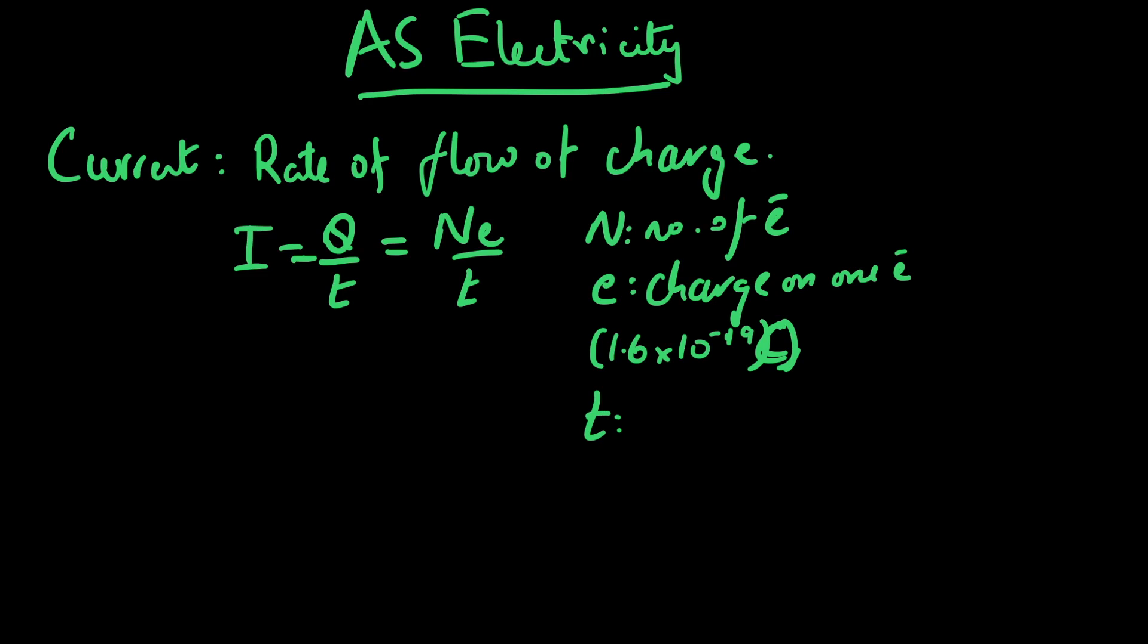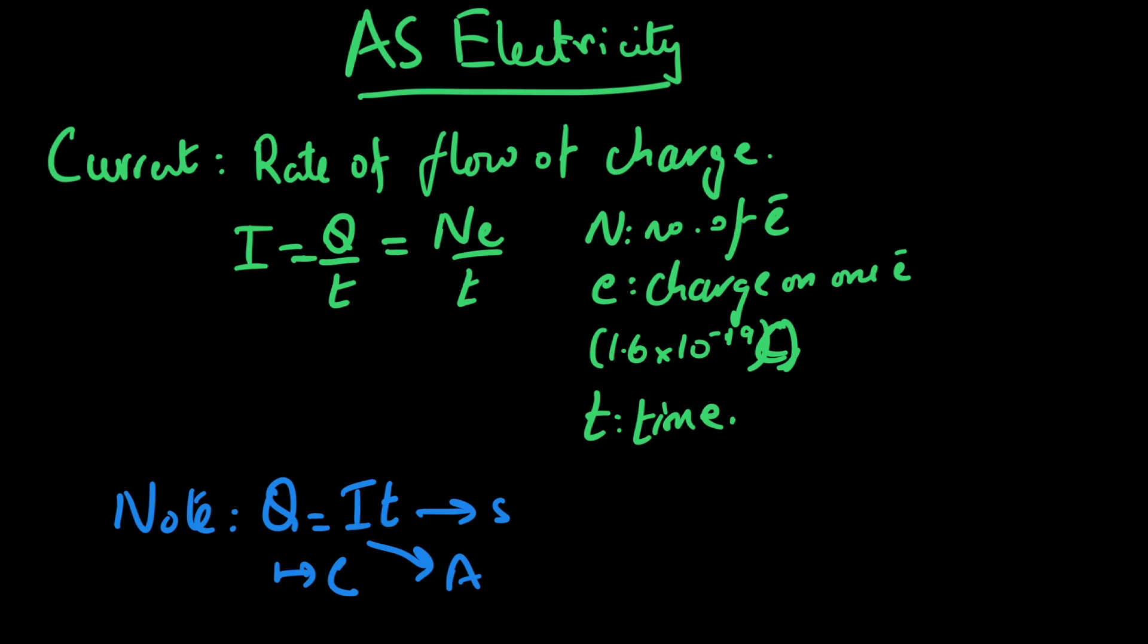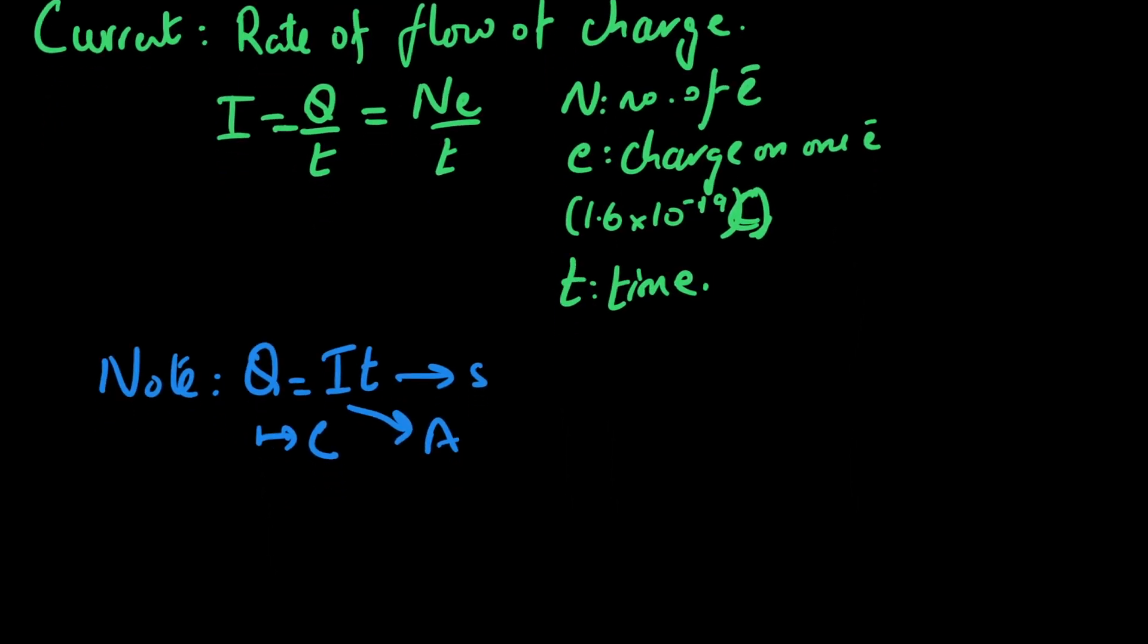From this you can very easily derive Q equals It, because if I is Q over t then Q equals It. You must understand that charge's unit is coulomb, current's unit is ampere, and time's unit is second.